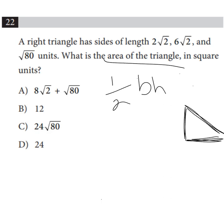And then square root of 80 is the hypotenuse. And we know that because square root of 80 is the biggest of the three side lengths.